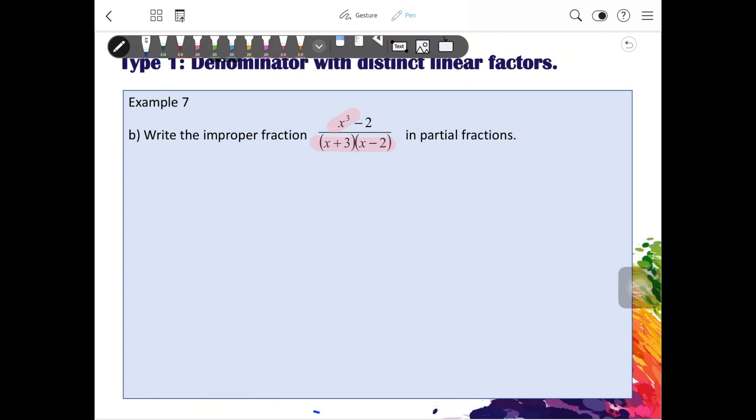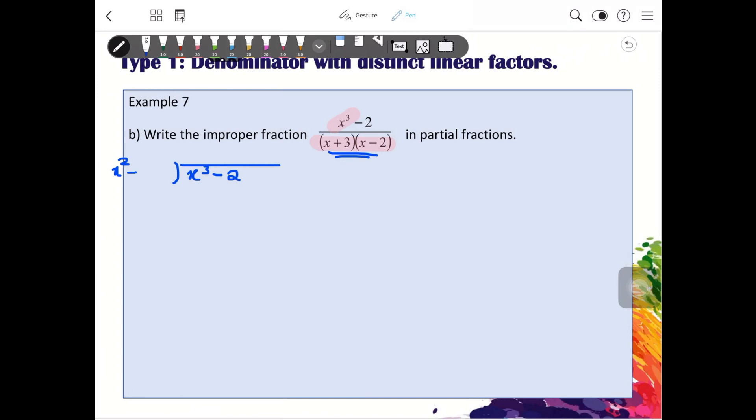To do long division, you will draw a line, and then x cube minus 2, and the divisor here is x squared plus x minus 6. So we will put x here, we will get x cube plus x squared minus 6x.